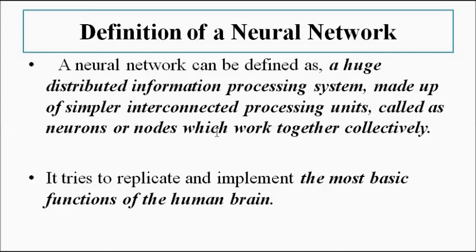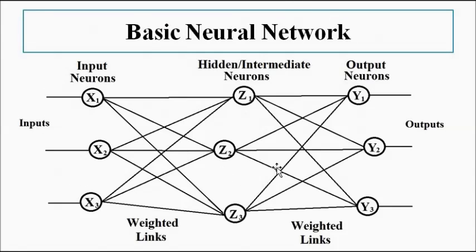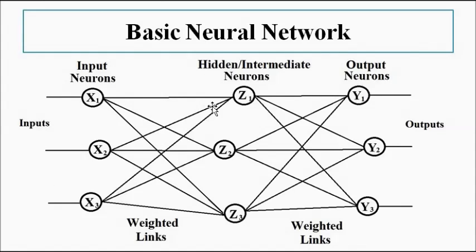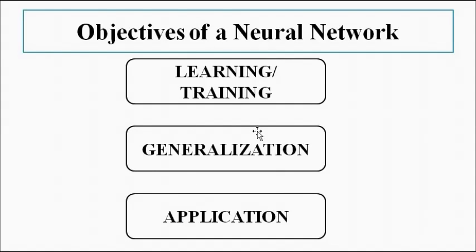This is how a neural network basically looks. This is a very simple neural network — the ones actually implemented are much more complex and complicated in their design and functioning. The individual nodes and neurons are shown as circular portions named x1, x2, x3, z1, z2, z3, y1, y2, y3. Inputs are provided to it, each node is connected through communication links, and then we get the output. We'll discuss these in separate videos.